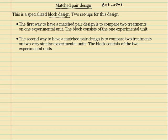The second way to do a matched pair is to compare two treatments on two very similar experimental units, the block consists of those two experimental units. So let's talk about this one for a sec.